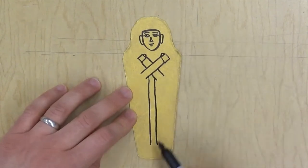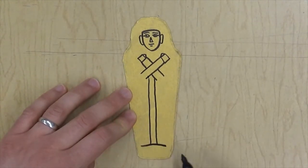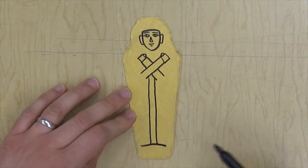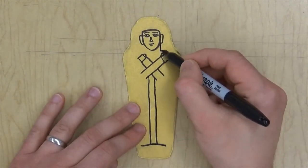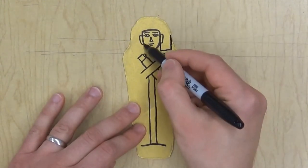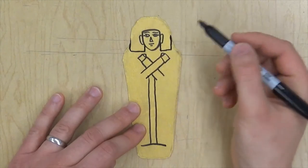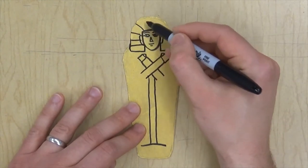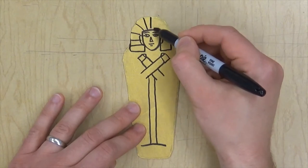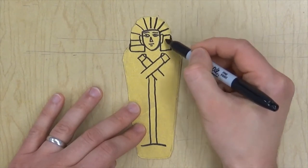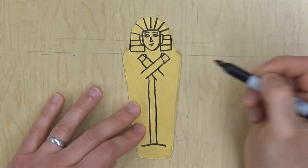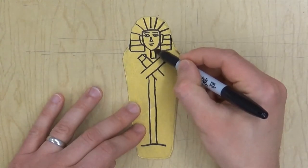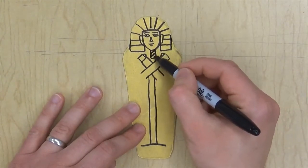I think I'll do a headdress too—this is almost like a crown in ancient Egypt that the Pharaoh would wear. I'm going to give him a beard too. It's like a fake beard; it's another thing that the king would have.